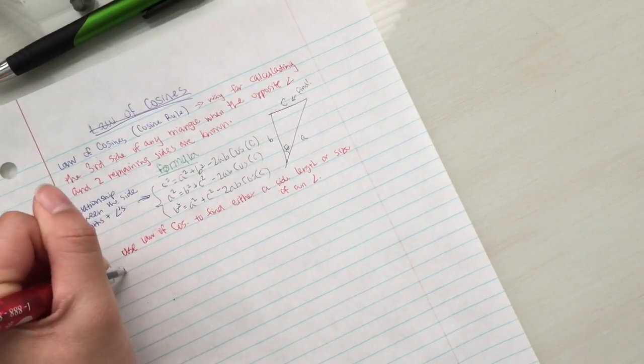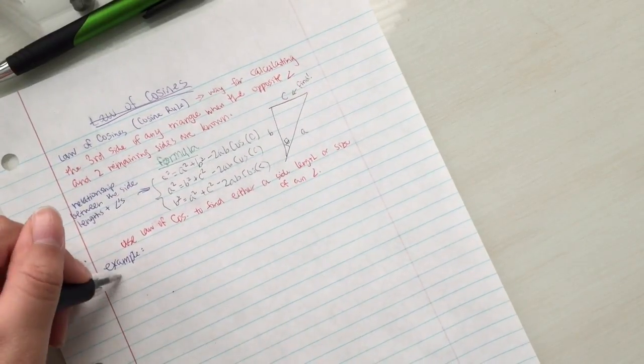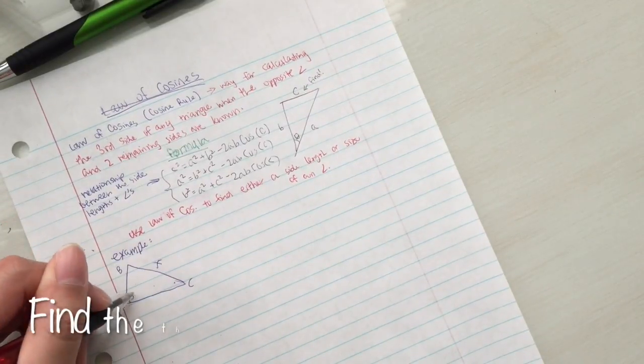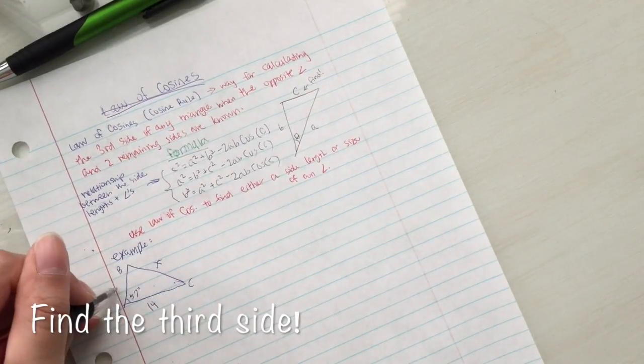In triangle ABC, the lengths 6 and 14 are given, and the included angle is 57 degrees. The goal is to find BC, or x.